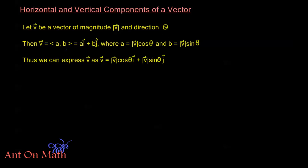Then V, which we can write as AB, we can also write as AI plus BJ, where A is equal to the magnitude of V times cosine theta, and B is equal to the magnitude of V times sine theta. Let's take a look at that before we go on. What we're saying is we have this vector V out in space, and I'll draw it in standard position — it's a little easier to work with theta.